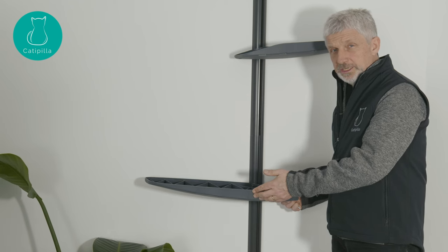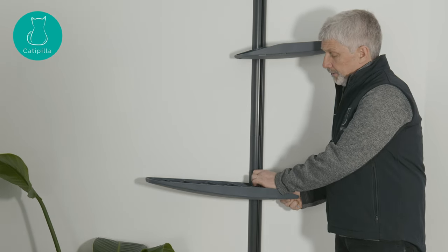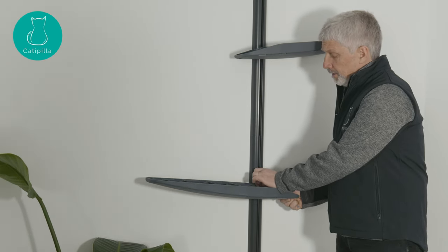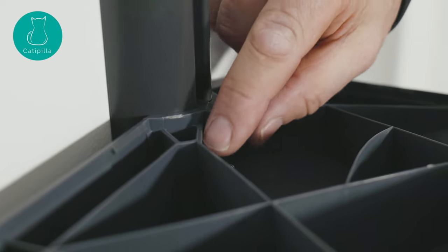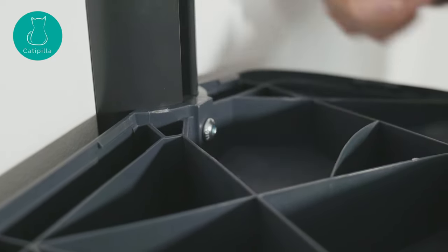Once you've placed the tread plates in the position you want them, we need to lock them into place. You do that by tightening the bolts initially by hand, and then when it gets a bit tight, use the small allen key to do the final few turns.